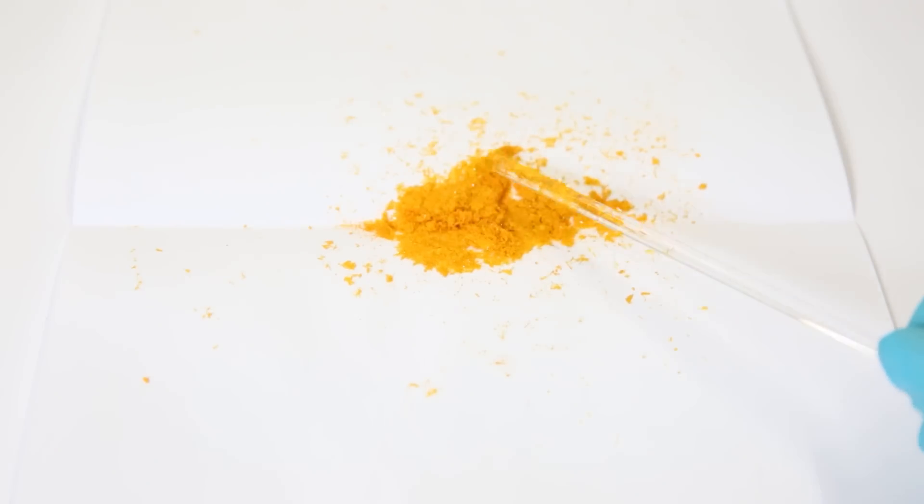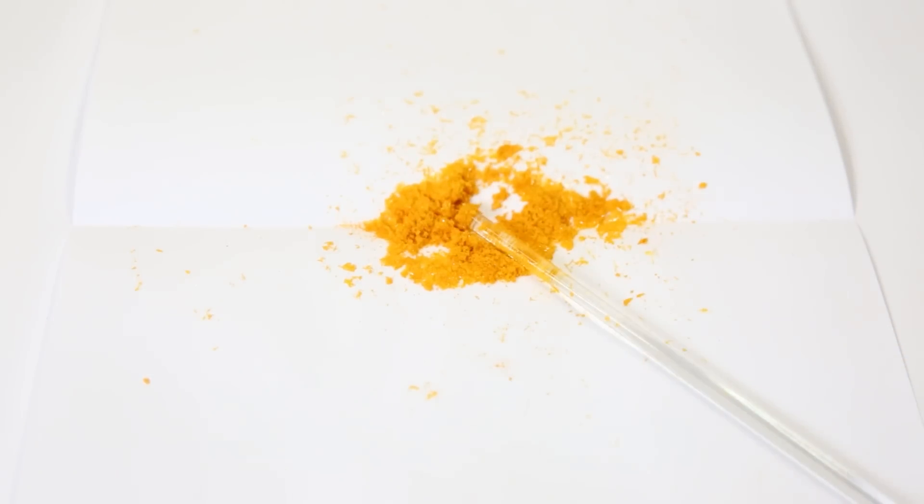Now with this ferrocene, I want to try a reaction. I want to make ferrocenium tetrafluoroborate, which is a blue complex. Ferrocene can be oxidized to the cation ferrocenium and then complex with tetrafluoroborate. To try this out, I will do it in a simple way without exact amounts.